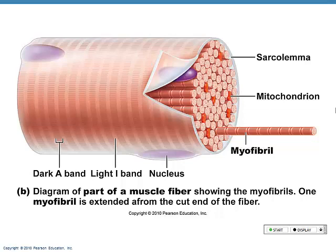Why does a muscle cell have more than one nucleus? Because it's so long. Skeletal muscle cells are one of the very few groups of cells in our bodies that are multi-nucleated, so we'll see several nuclei in any given muscle fiber. We also have sarcoplasm flowing through it — that's just like the cytoplasm of a muscle cell.